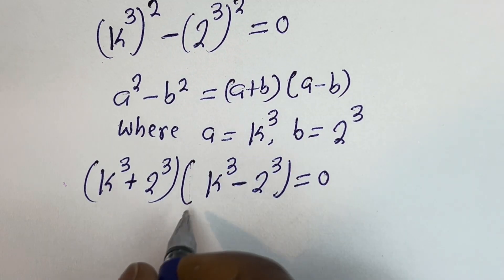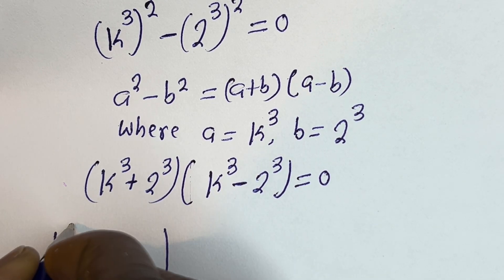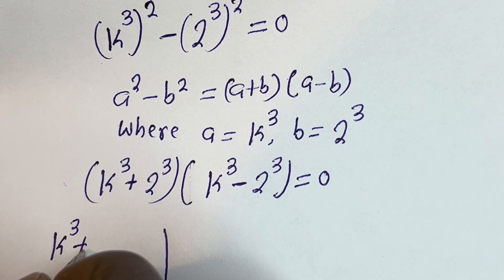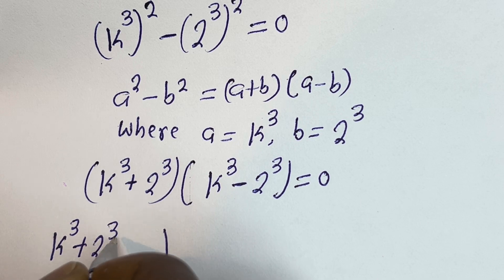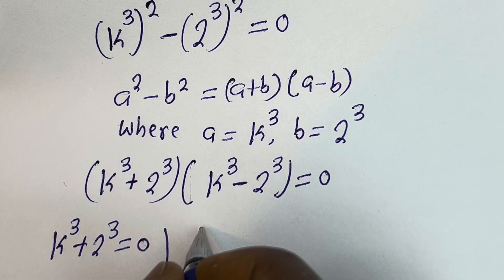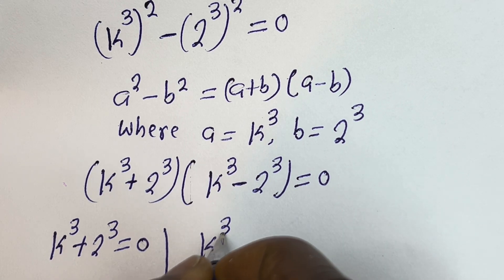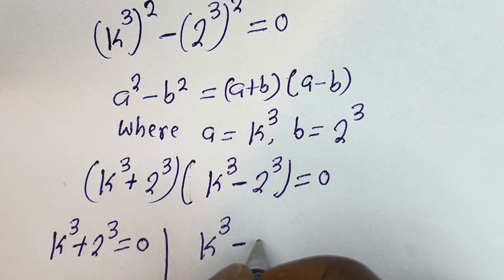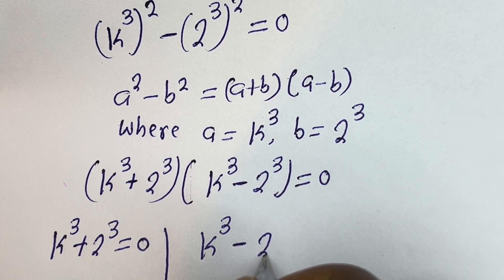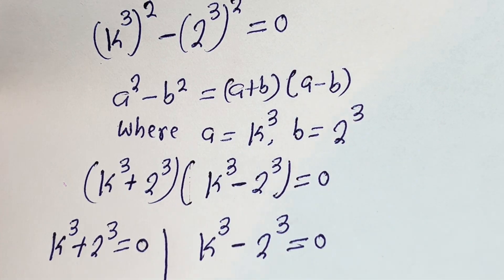There are two cases here. The first case is k to the power of 3 plus 2 to the power of 3 is equal to 0. And the second case is k to the power of 3 minus 2 to the power of 3 is equal to 0.